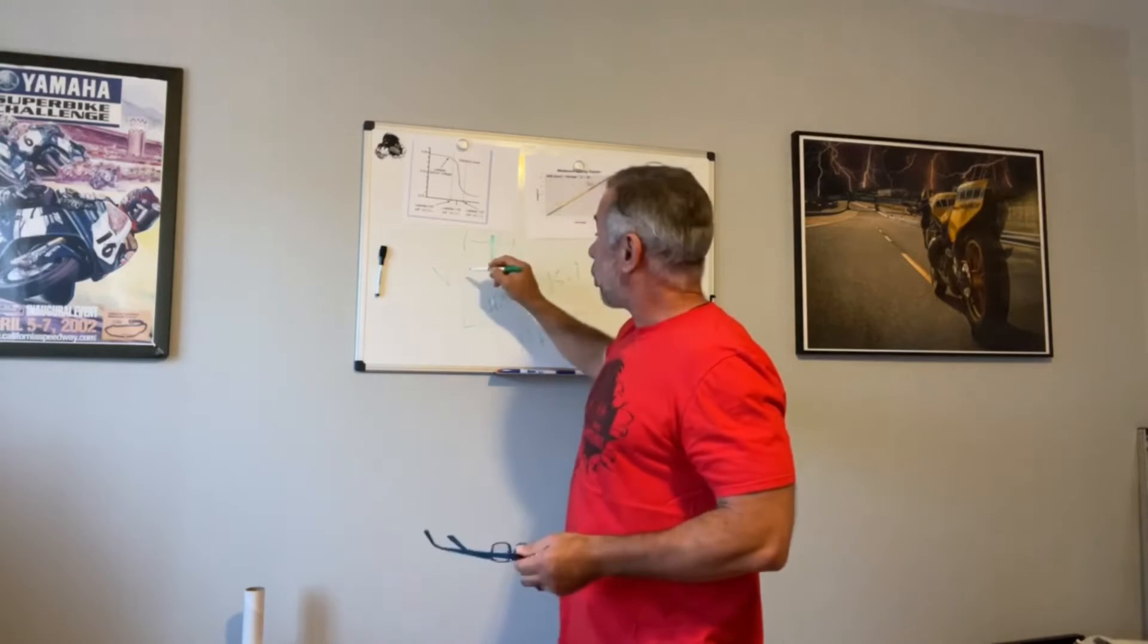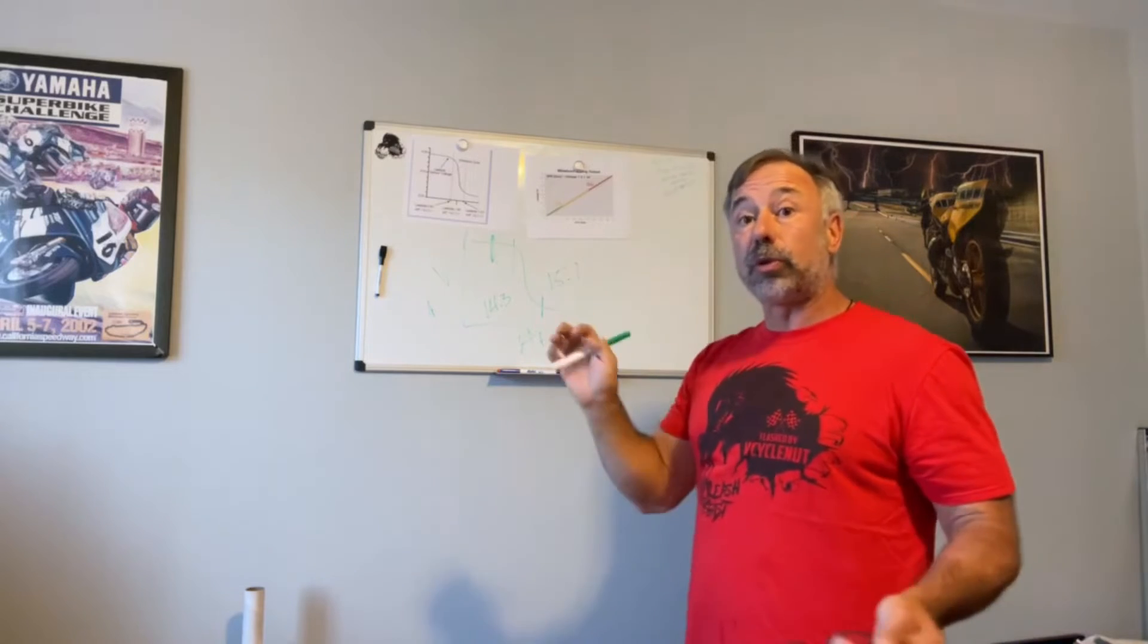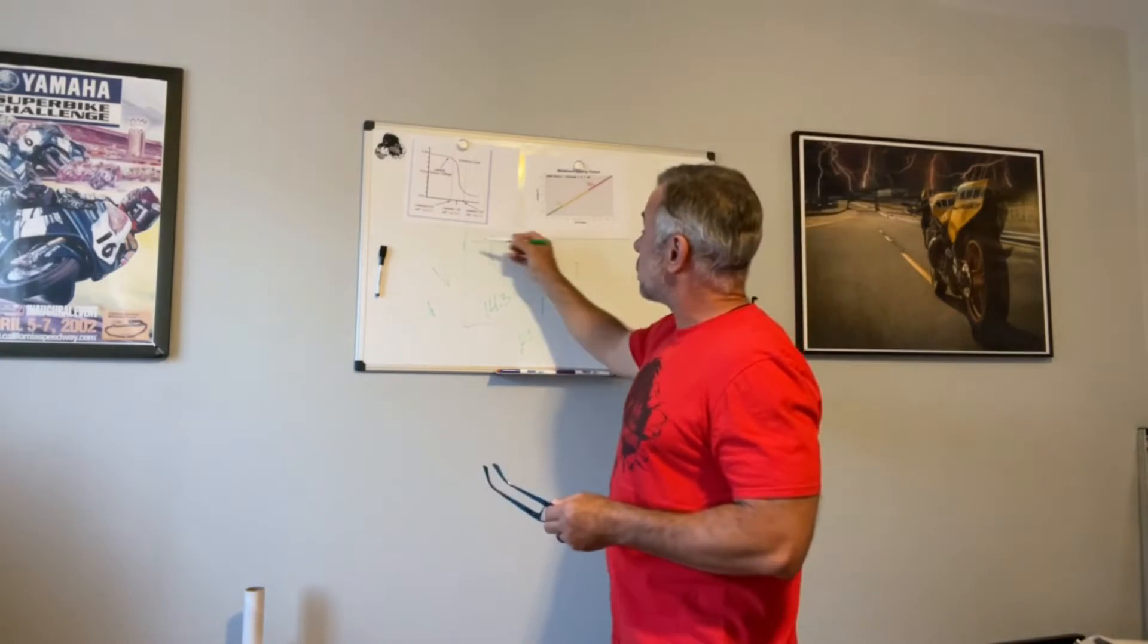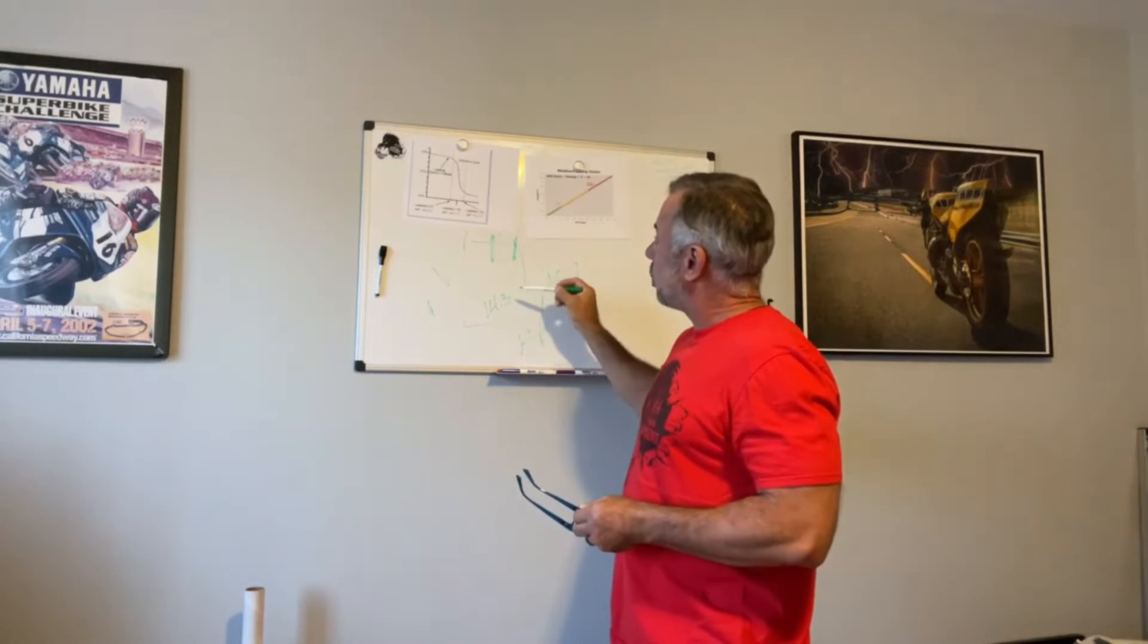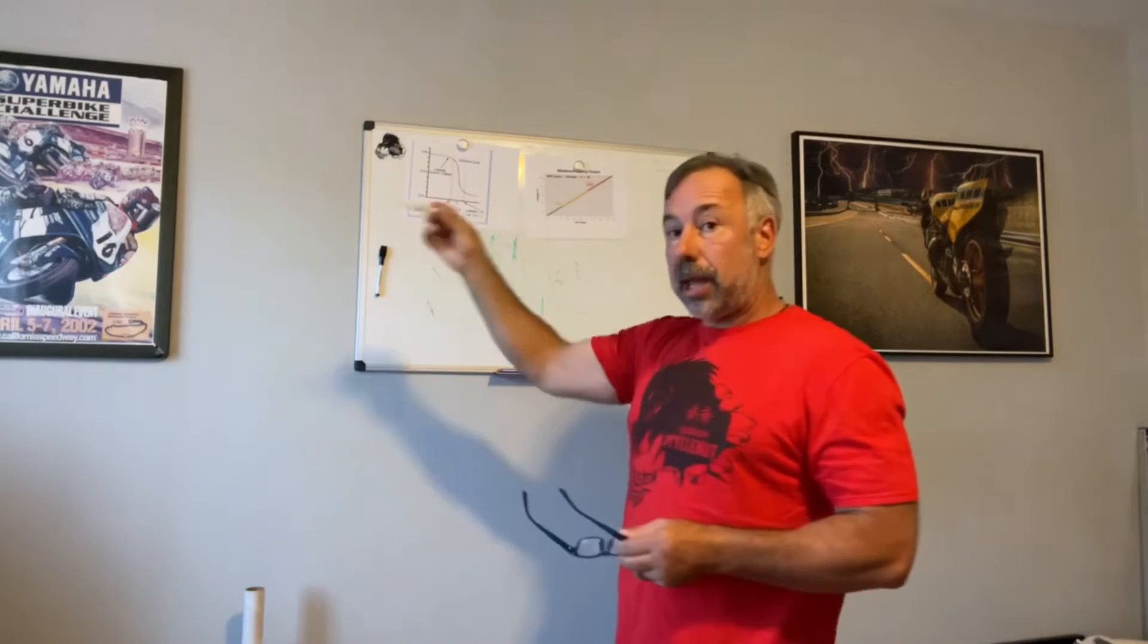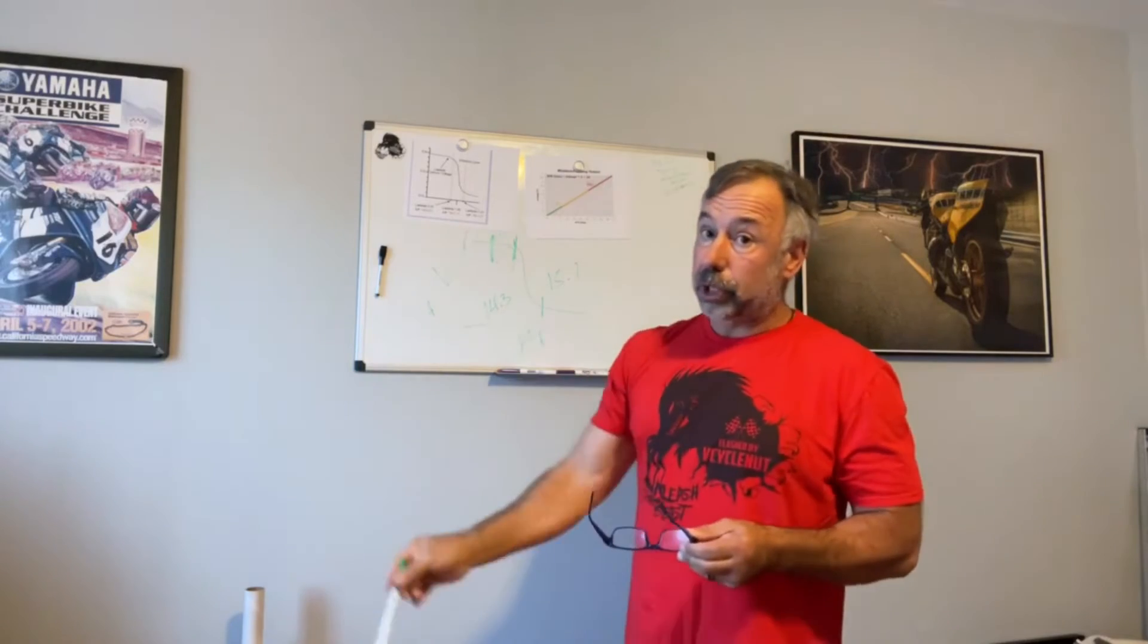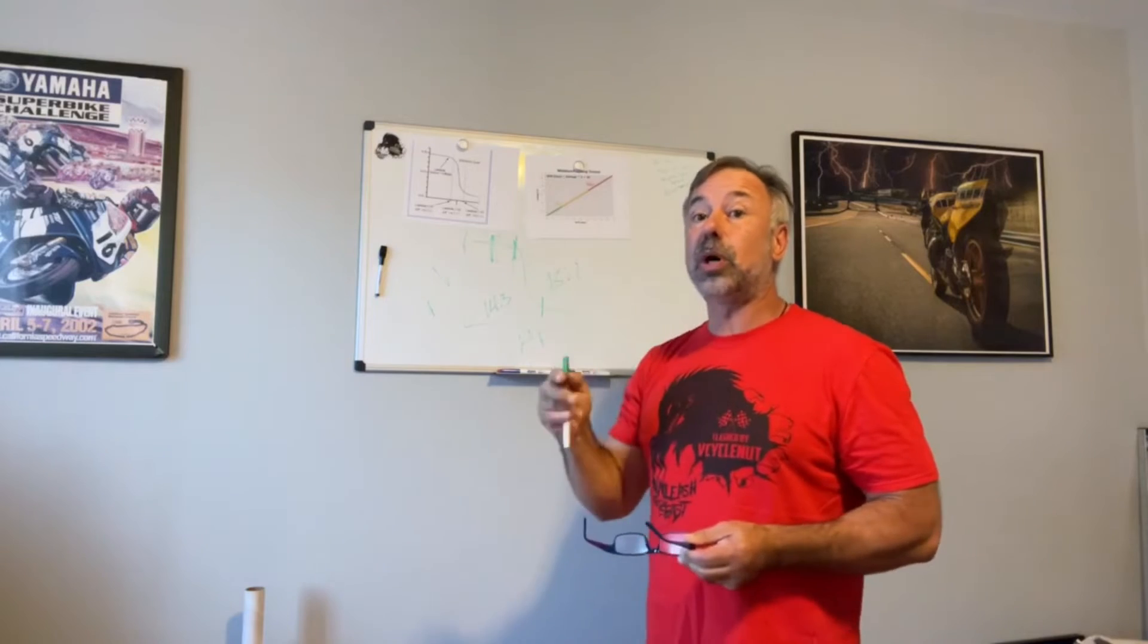So on our motorcycles, we generally want to be on this side here. We want to be at part throttle, high 13s, or full throttle, more in the low 13 to ones, but all of that is on this side of that curve. So if you're below 14.3, the voltage that you get back is almost the same as you go back. So we know it's richer than 14.3, but how much richer? I don't know because the difference in the voltage is so small.